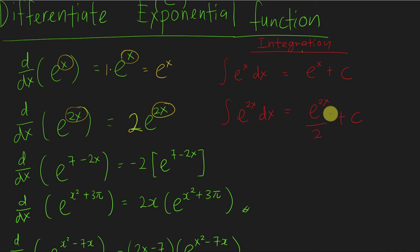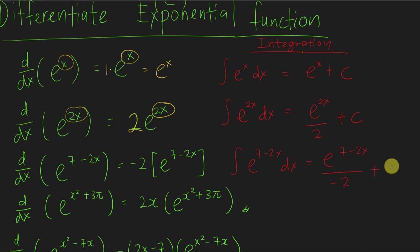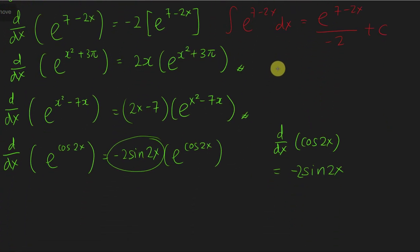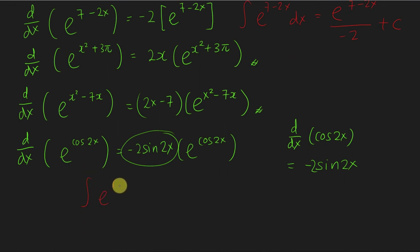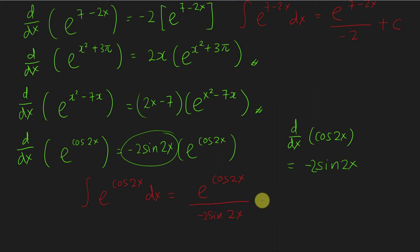If I integrate e^(7 − 2x) dx, I get the same thing — e^(7 − 2x) — but I differentiate the power, which gives negative 2, and I write that at the bottom, plus c. So for the same examples, if I integrate e^(cos 2x) dx, I copy the whole thing: e^(cos 2x), then divide by the derivative of cos 2x, which is negative 2 sin 2x, plus c.